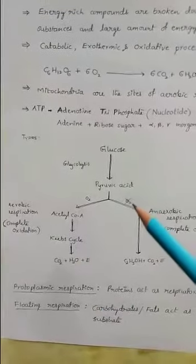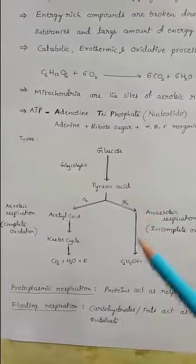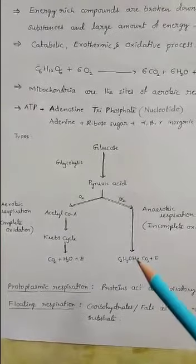If oxygen is not available, then pyruvic acid is converted into ethyl alcohol and carbon dioxide.